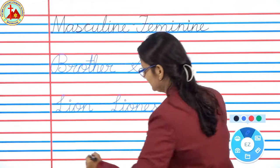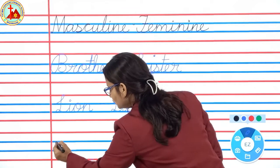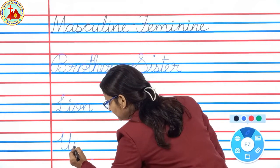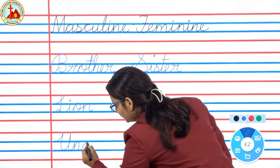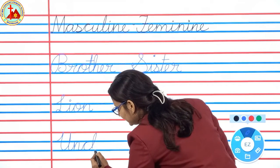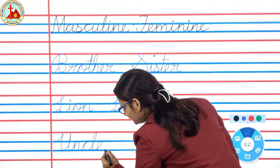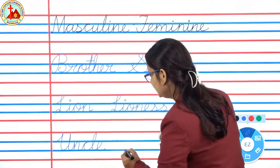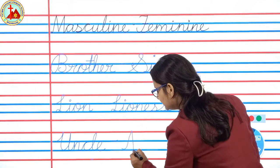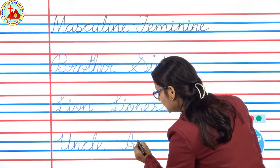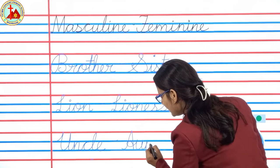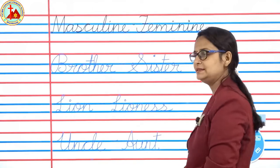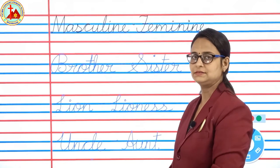One more example — uncle. Capital U, within blue line: N-C-L-E. Uncle. And feminine word: aunt. A-U-N-T. Aunt. Uncle, aunt.